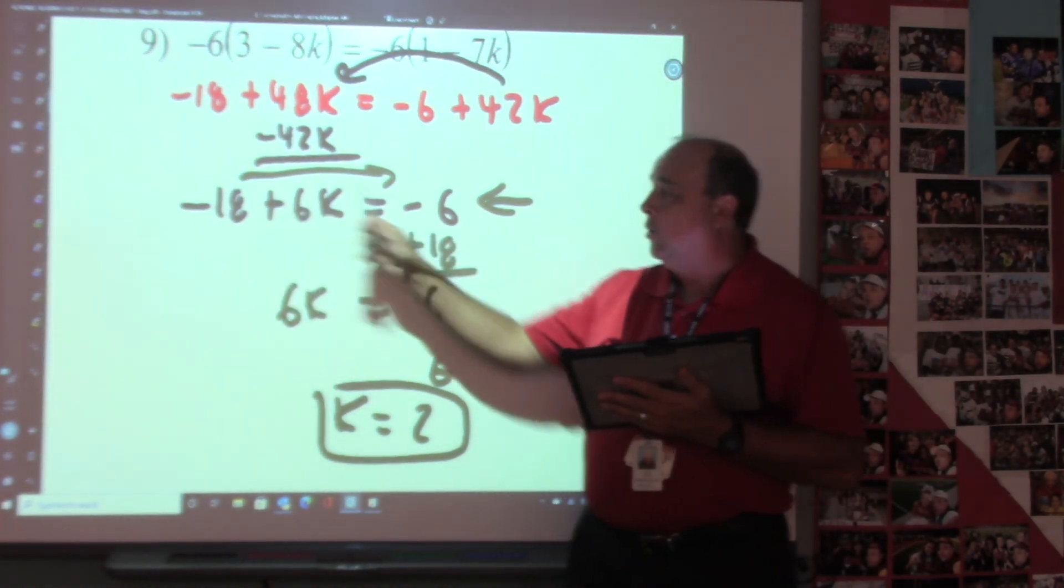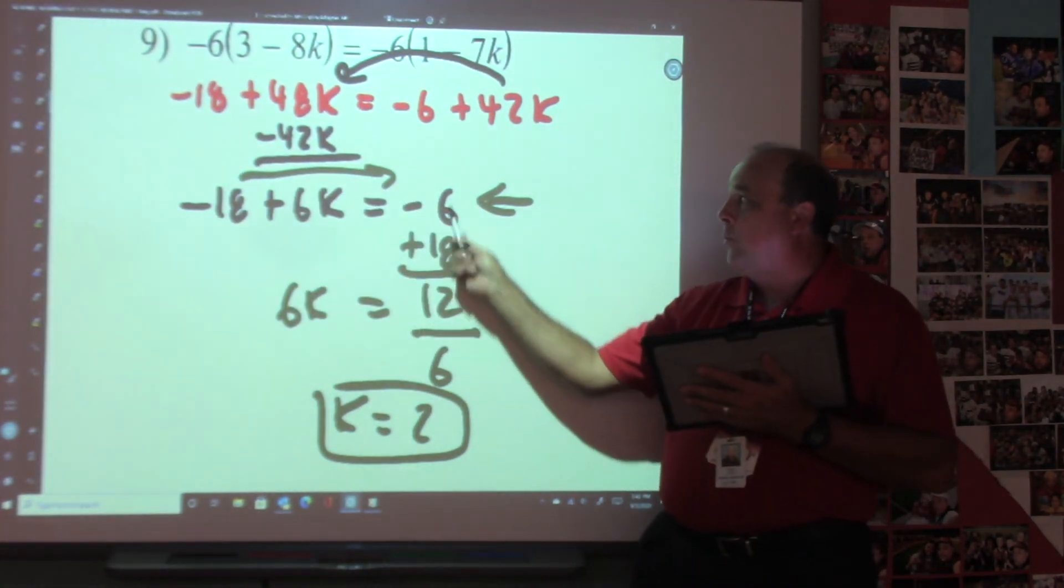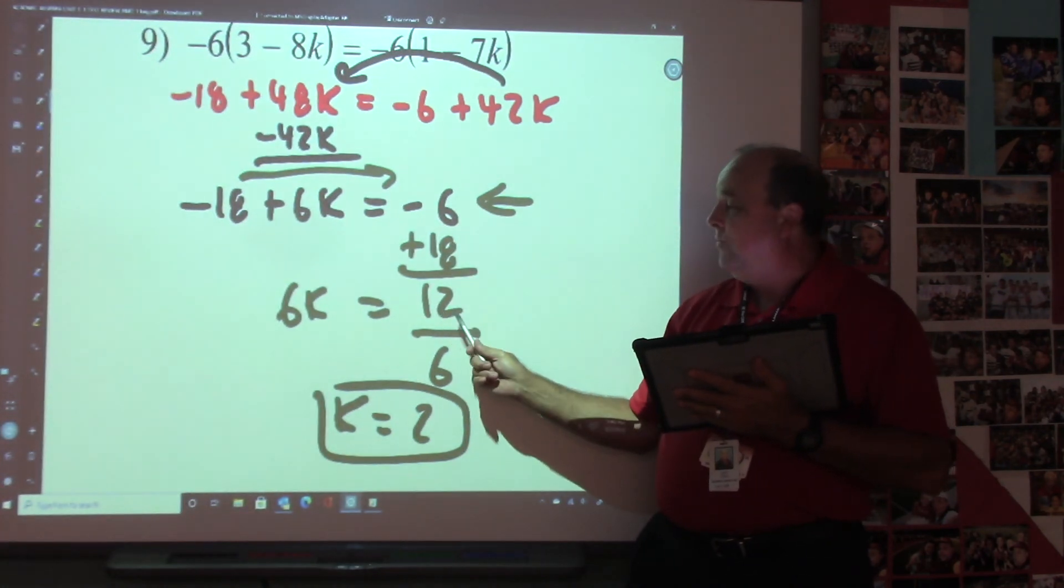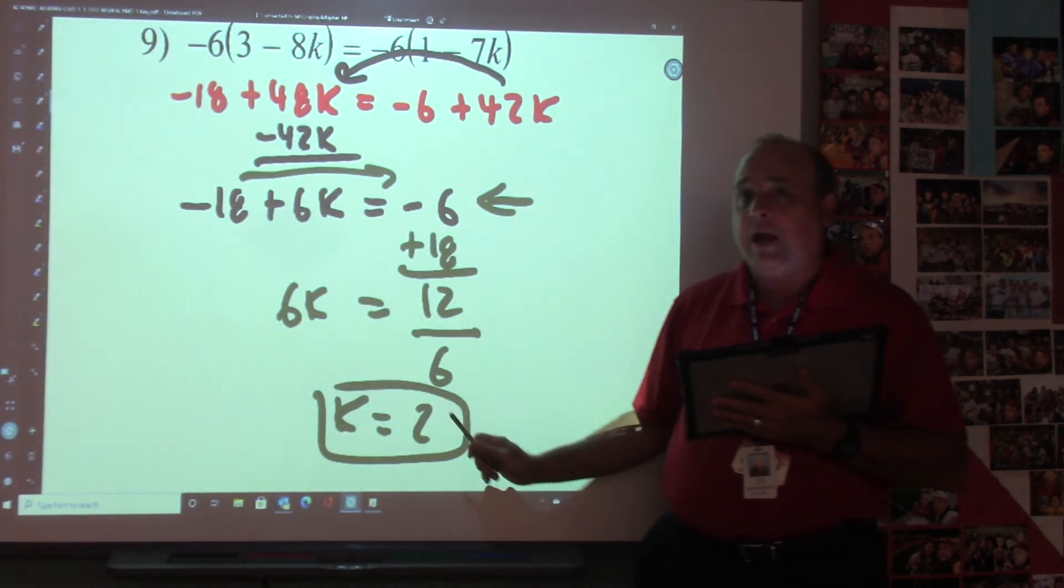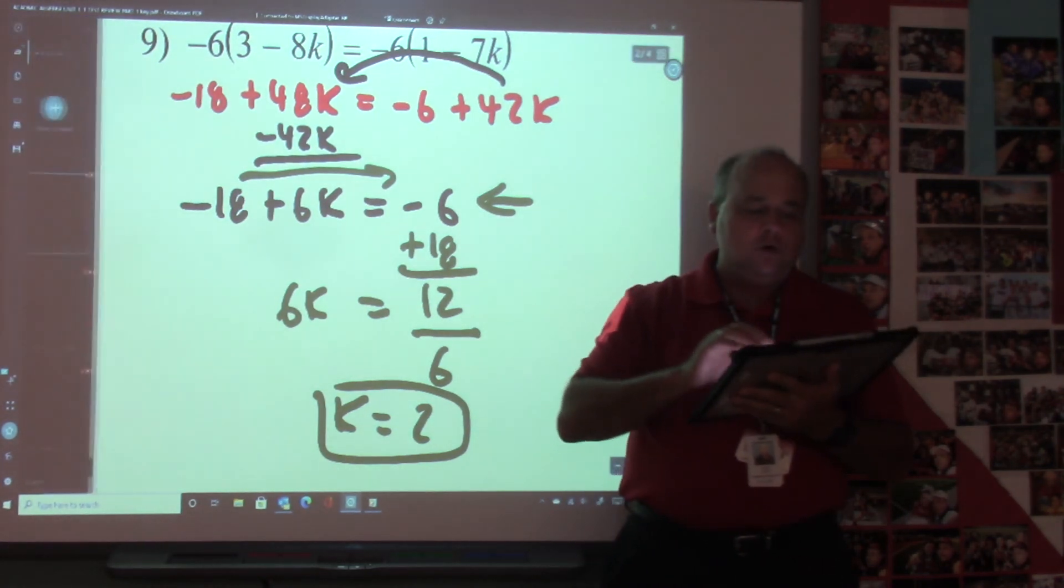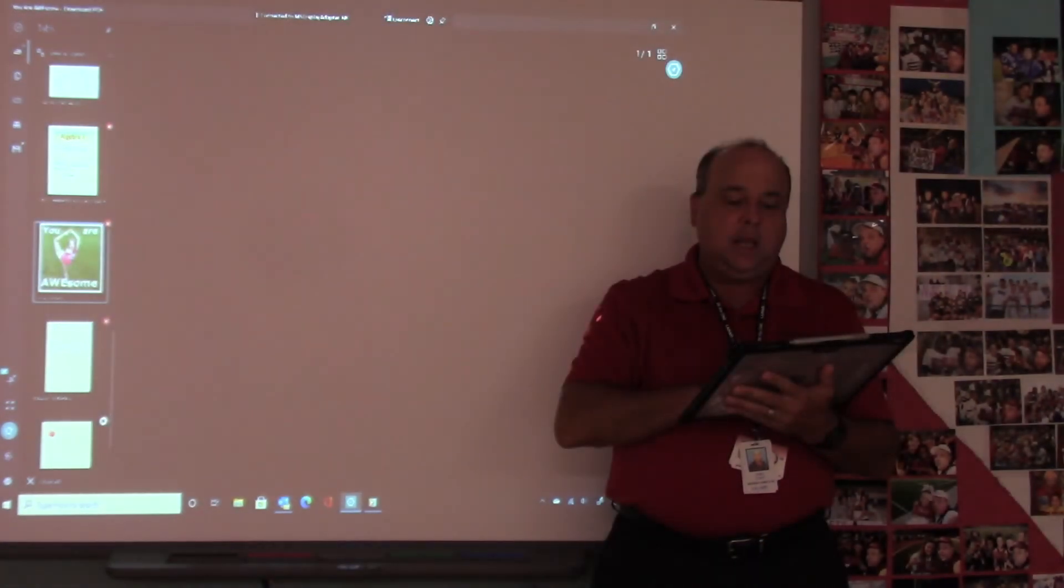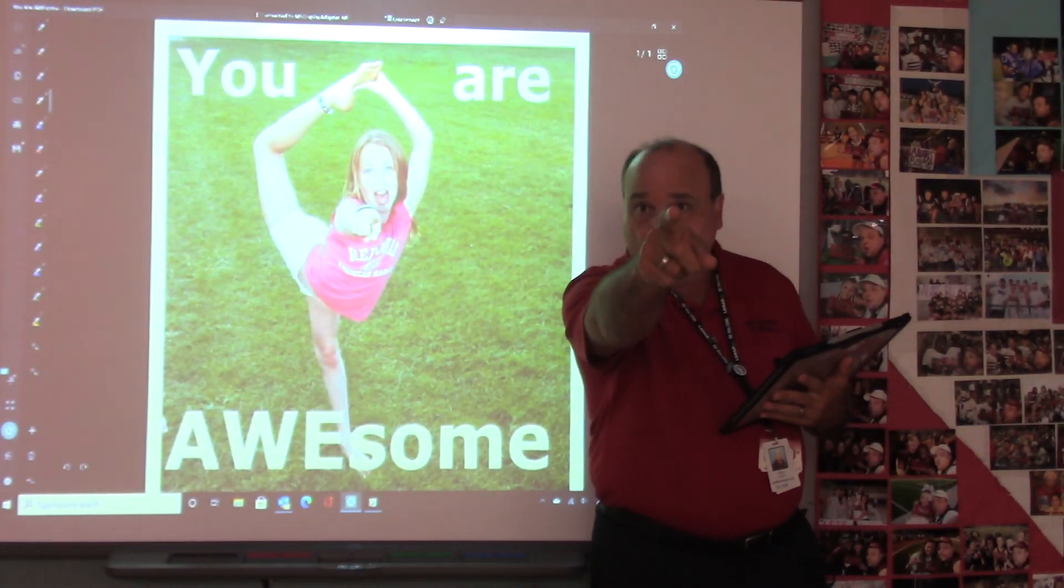So remember, when you get to right here, use the calculator. Type this number in. Do the opposite operation. Add or subtract them, and then hit divide by your coefficient, and you got the answer. Your test is going to be soon. You're going to do very good on it. Remember to always believe, and you are awesome.